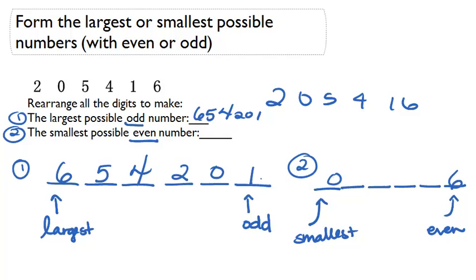The smallest digit is zero, then one, then two, then four, then five. So the smallest possible even number is one, two, four, five, six. So these are your final answers.